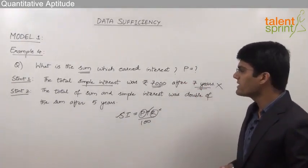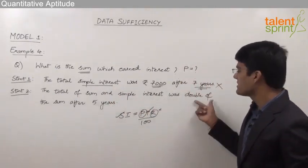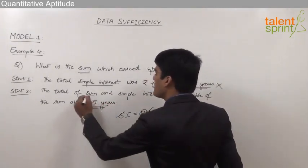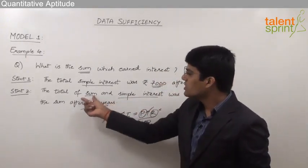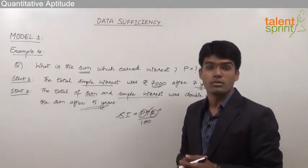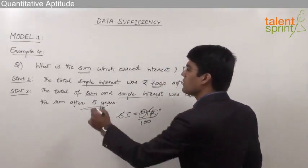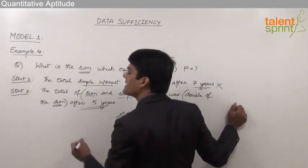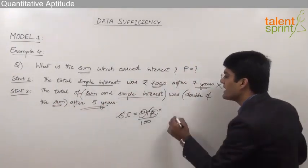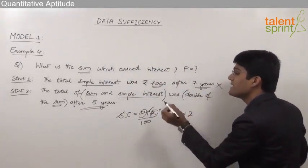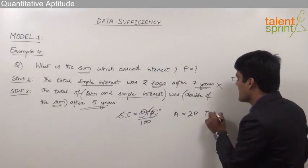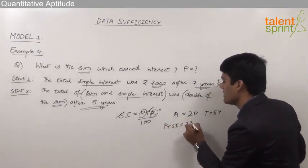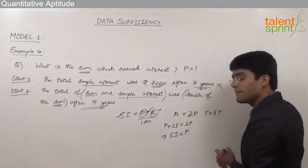Statement 2 says the total of sum and simple interest was double of the sum after five years. The total of sum (principal) and interest is nothing but the total amount A. So after five years, the total amount A was double of the principal: A = 2P. Since A = P + SI, we can write P + SI = 2P, which gives us SI = P after a time period of 5 years.